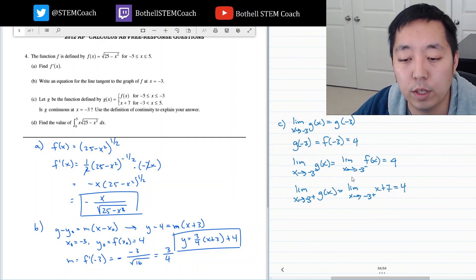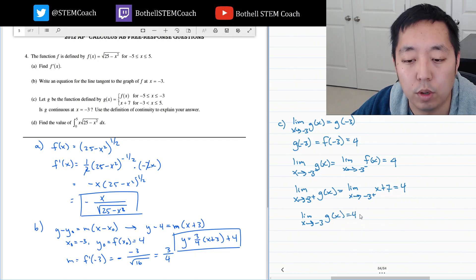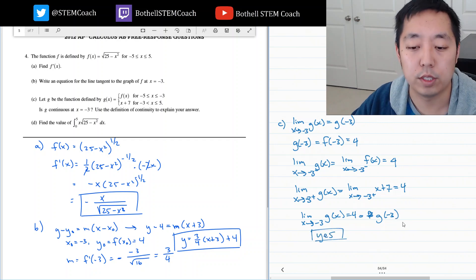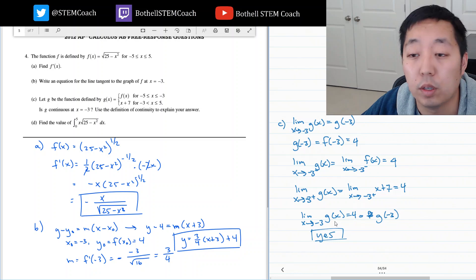So because from the left and the right, the limits are the same. That means the limit of x approaches negative 3 of g of x is equal to 4, which is equal to g of negative 3. So yes, it's continuous there. Because these two are equal.